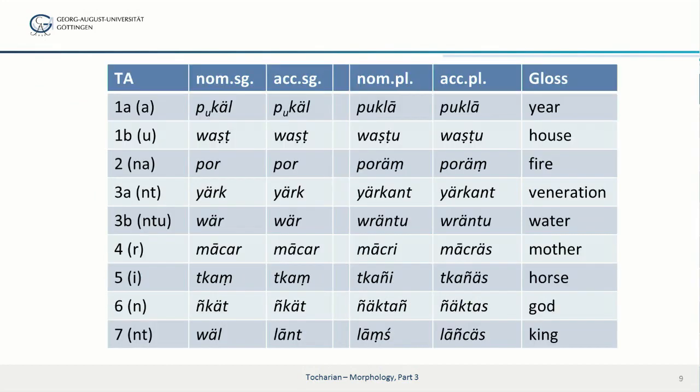And here are our examples, and as you can see, some of them are actually cognate with Tocharian B. Again, we have a word for year in class 1. Then class 1B, that's a special class of Tocharian A, where we have waṣt 'house', with the plural waṣtu.